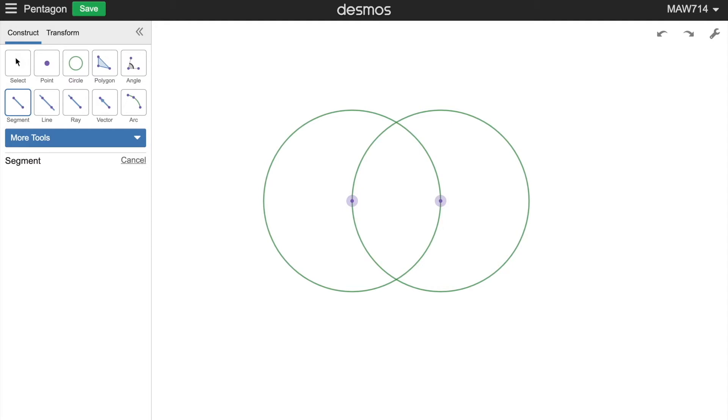So now we have this point here, we can draw a circle from this point to either one of these points. They don't matter because it's going to give the same circle.